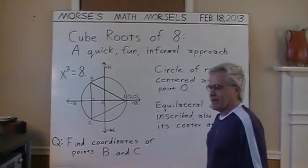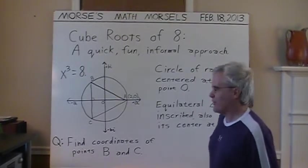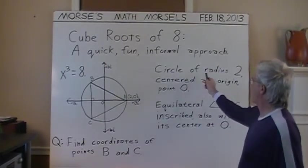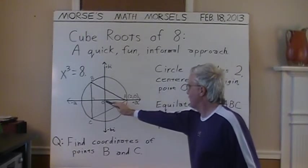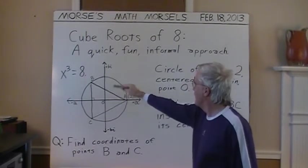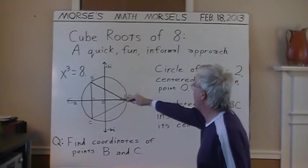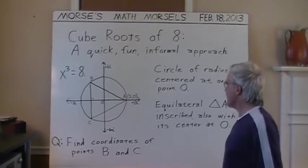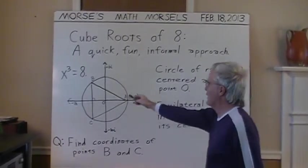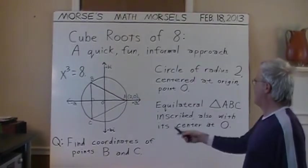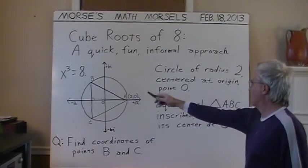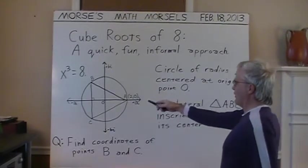And I'm claiming, again, this is informal, not much rigor here, that the circle is radius two, and it's centered at the origin here, where the a and the bi axis intersect. And I'm claiming that triangle ABC is equilateral, and it's inscribed within the circle, also with its center at the origin.